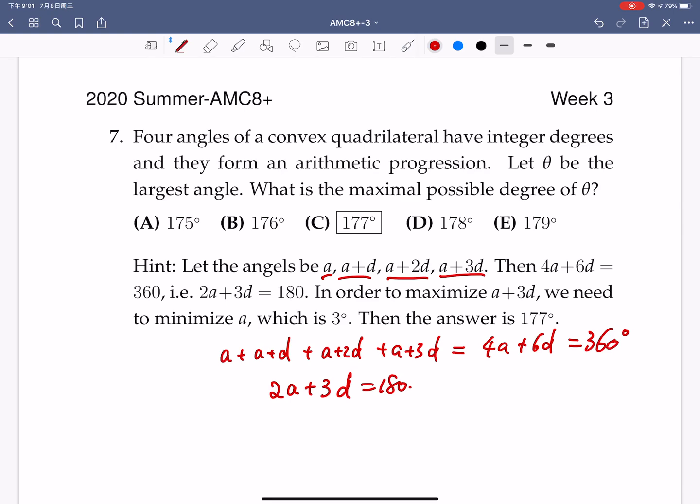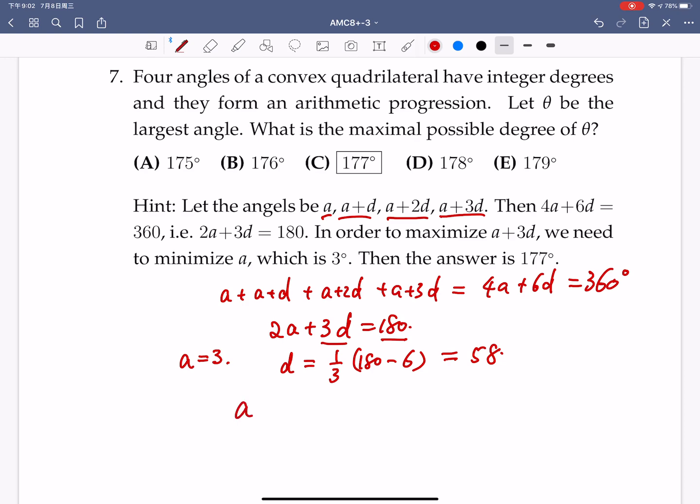So now A and D are integers and so you can conclude that since 180 and 3D are always divisible by 3, so does A. So A is divisible by 3, so the minimal of A is equal to 3. So the minimal possible A is equal to 3, and when A is equal to 3 you can solve for D. D would be equal to 1 third of 180 minus 6, so that would be equal to 58. And so when you have that, so A plus 3D would be equal to 3 plus 3 times 58, that's going to be equal to 177. So the correct answer is equal to 177.